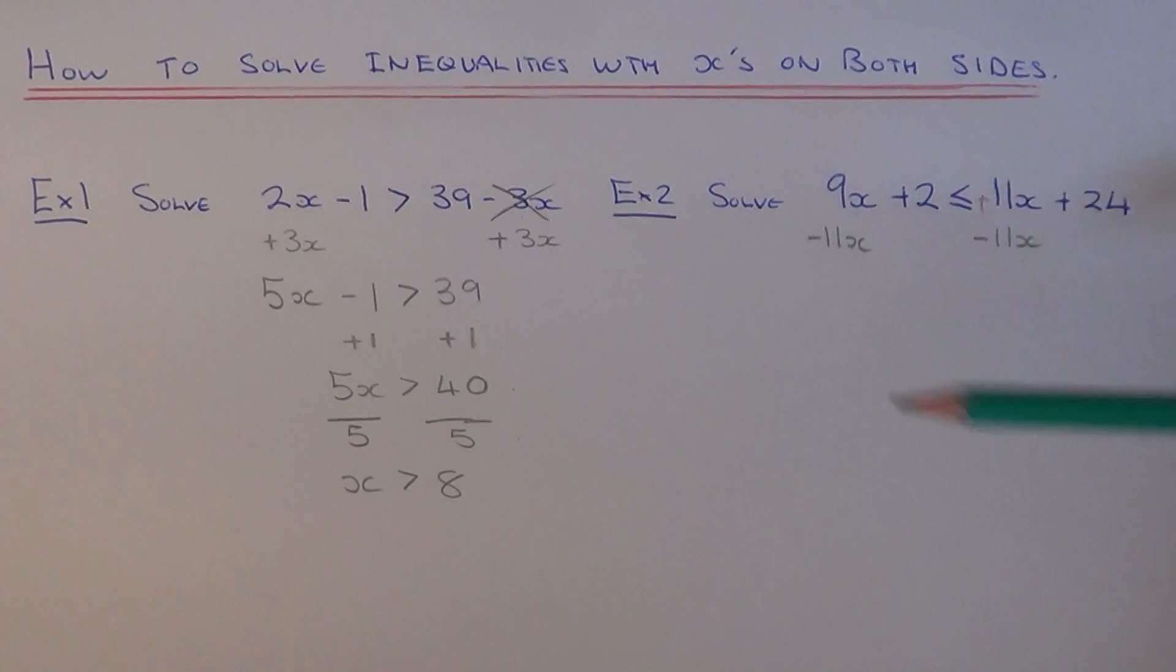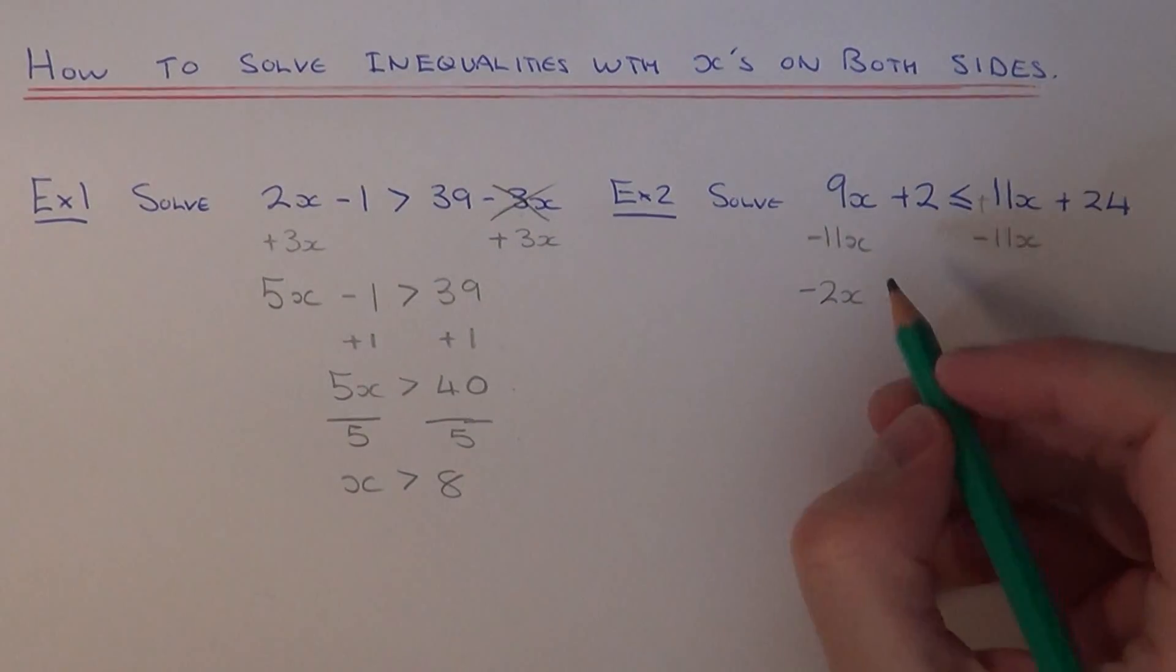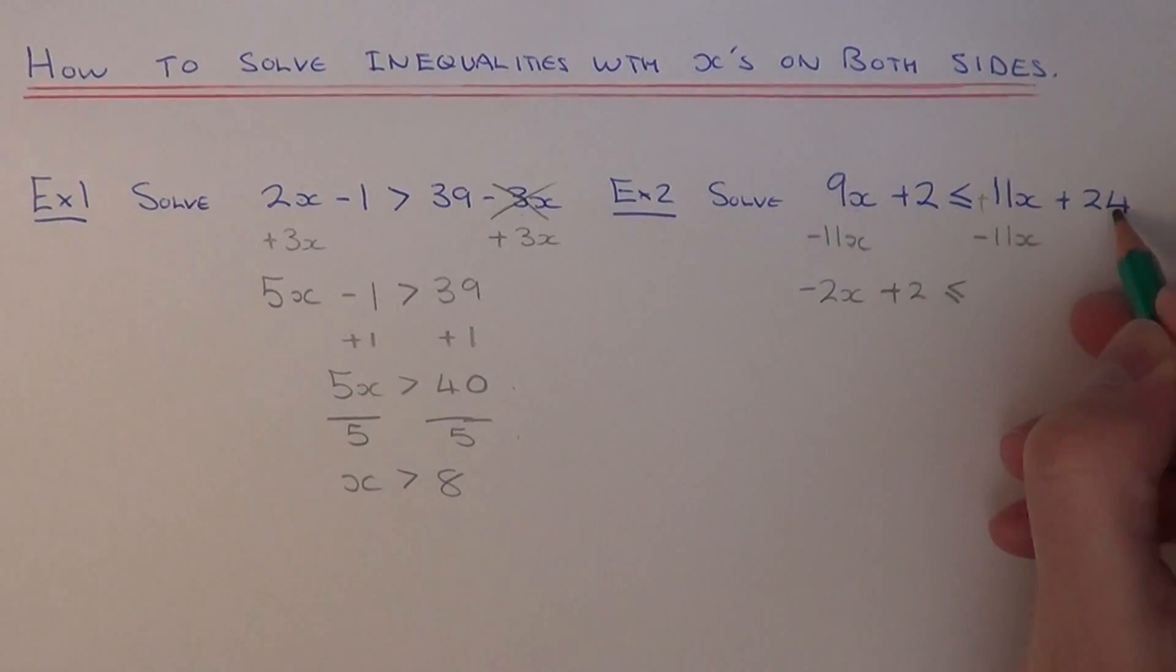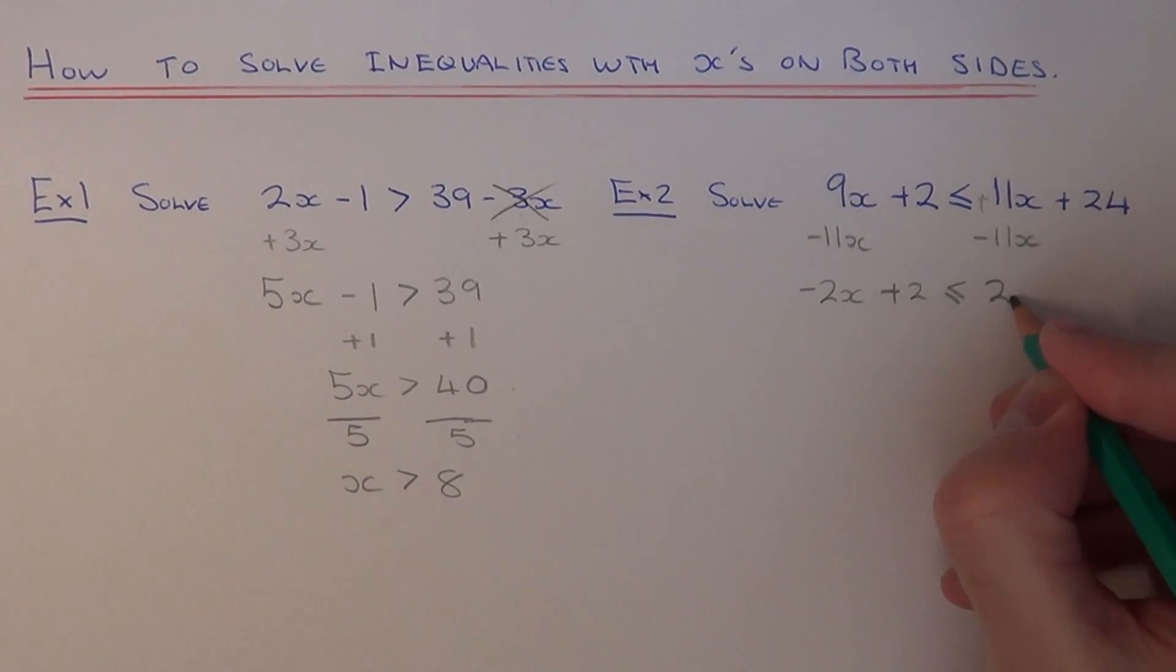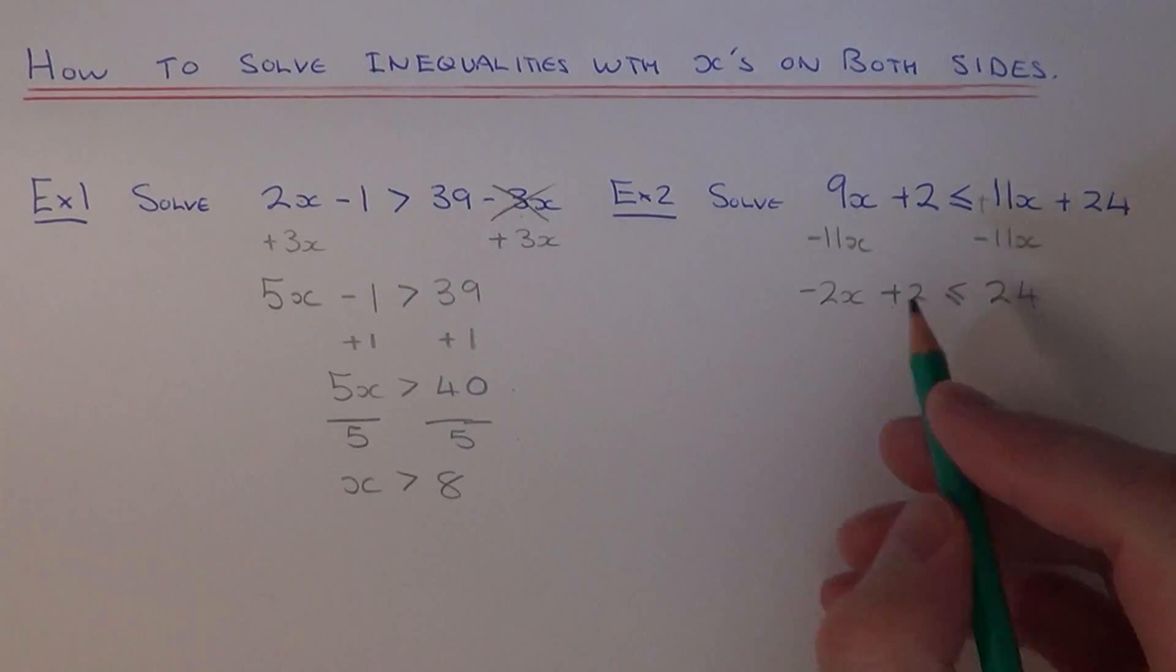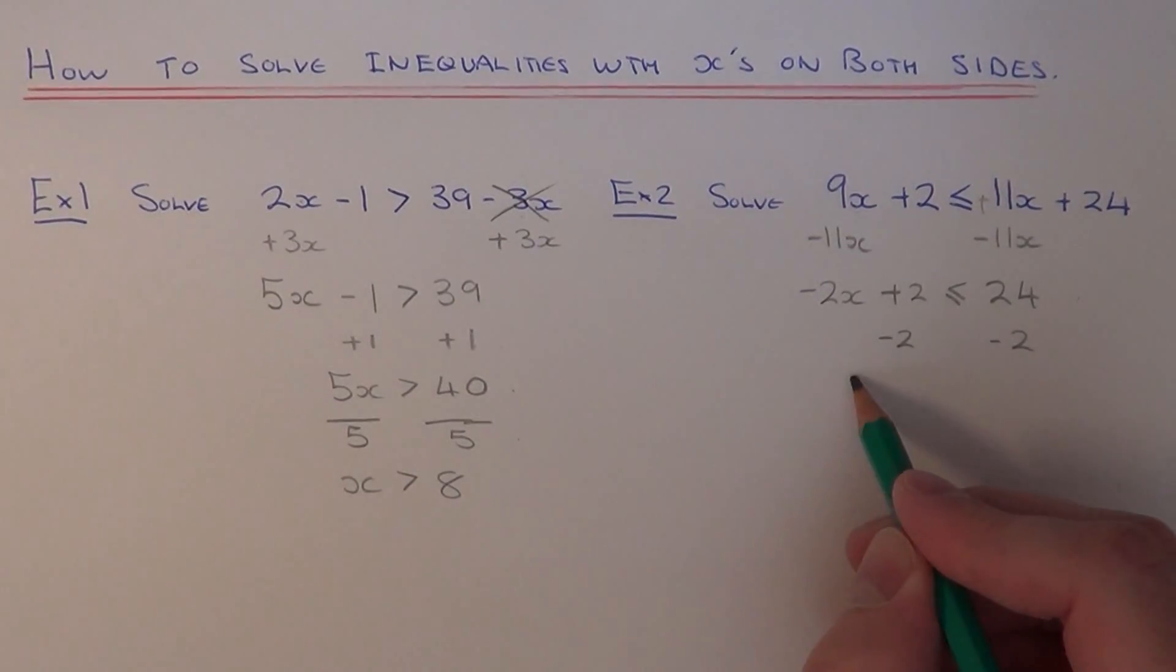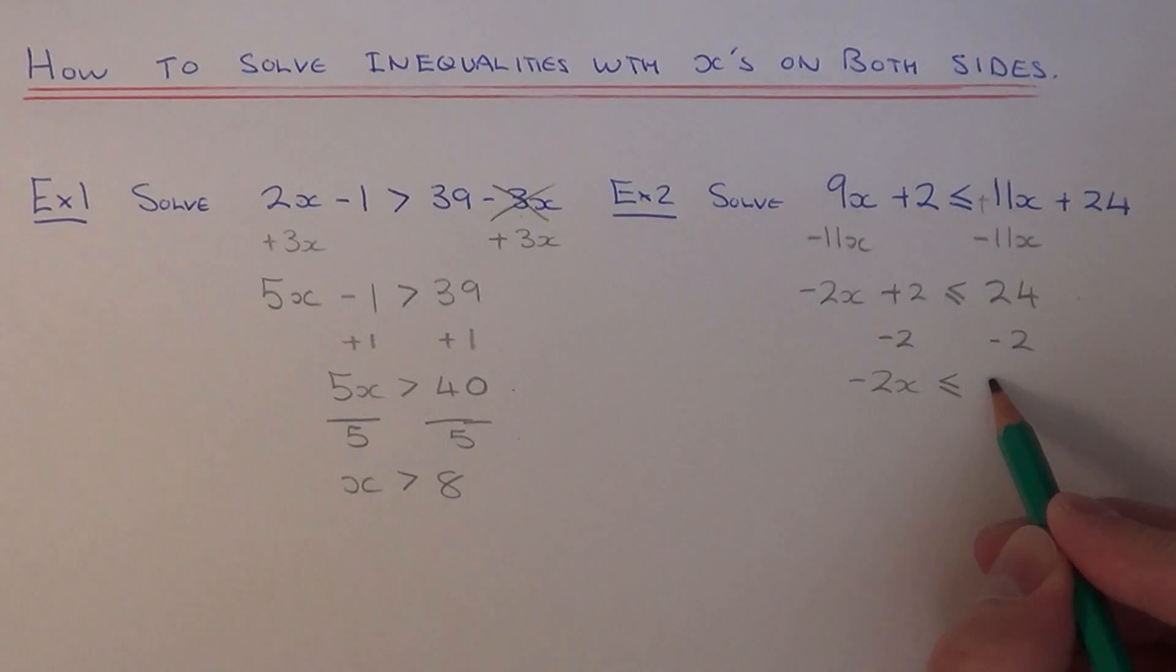So 9x minus 11x gives minus 2x. Copy the numbers down onto the next line and keep the inequality sign the same. So we end up with minus 2x plus 2 is less than or equal to 24. The next thing we need to do then is get rid of the plus 2, so we'll do this by subtracting 2. This will give minus 2x is less than or equal to 22.